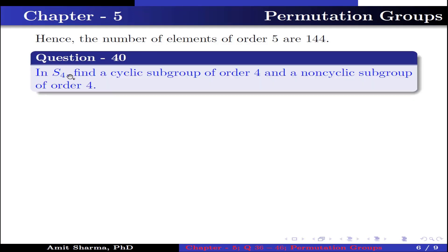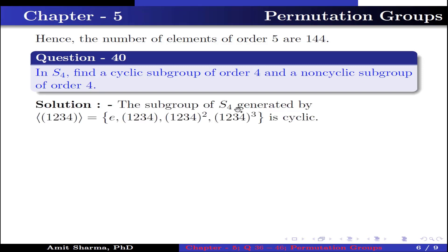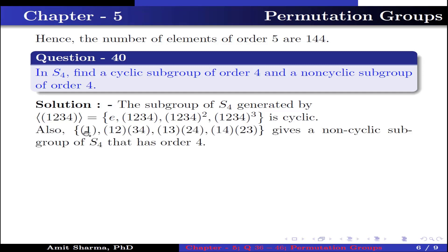Question number 40. In S4, find a cyclic subgroup of order 4 and a non-cyclic subgroup of order 4. The subgroup of S4 generated by the element (1, 2, 3, 4), containing the elements identity, (1, 2, 3, 4), (1, 2, 3, 4)^2, and (1, 2, 3, 4)^3, is cyclic. Also, the subgroup containing the elements {identity, (1, 2)(3, 4), (1, 3)(2, 4), (1, 4)(2, 3)} gives a non-cyclic subgroup of S4 that has order 4.